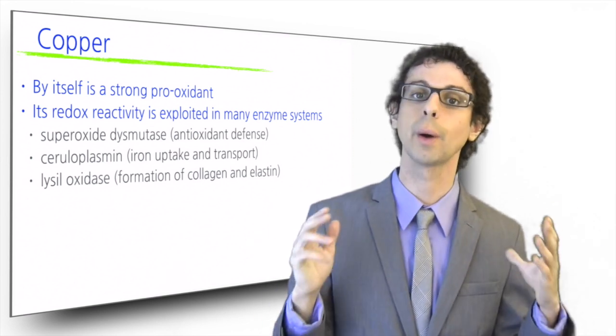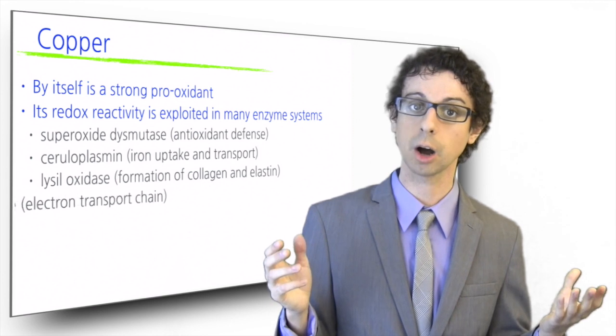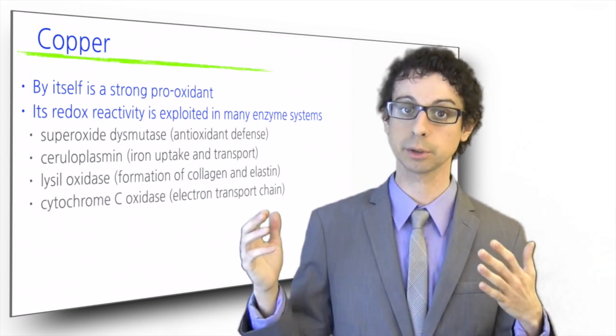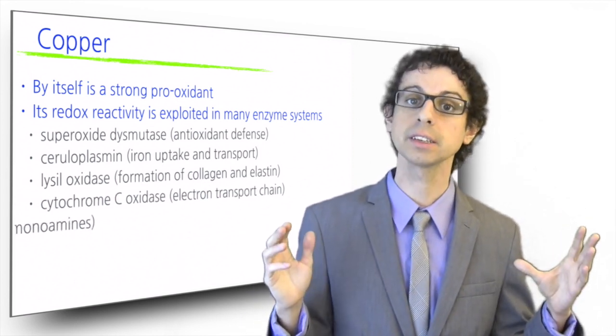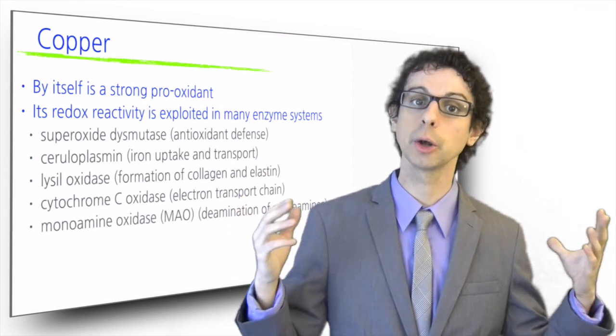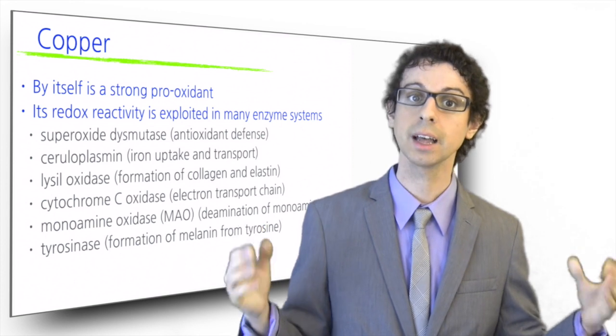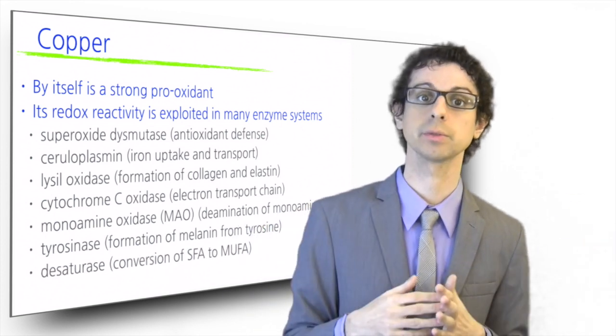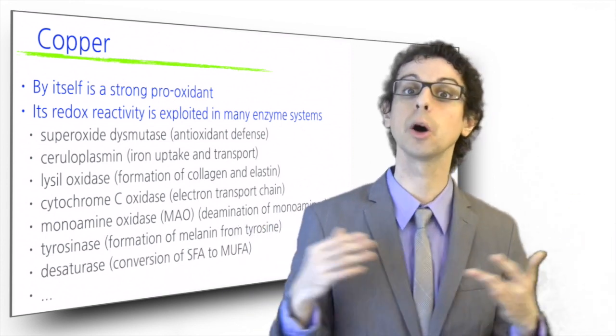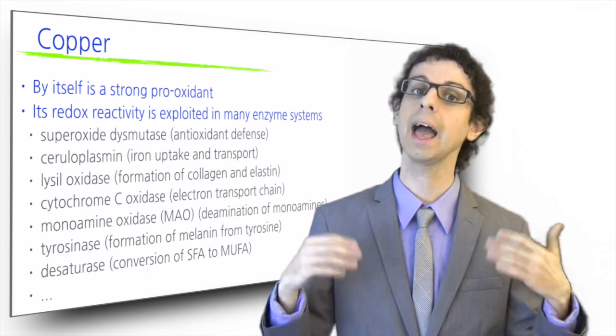Other enzymes that require copper are cytochrome C oxidase for the electron transport chain in mitochondria, monoamine oxidase for deamination of monoamines, tyrosinase for the formation of melanin from tyrosine, desaturase for conversion of saturated fatty acids to monounsaturated fatty acids, and many more.